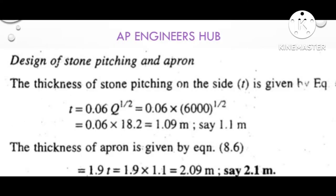Design of stone pitching and apron. The thickness of stone pitching on the side T is given by T equal to 0.06 root Q, where Q is discharge, say 1.1 meters. The thickness of the apron is given by 1.9 times T, say 2.1 meters.